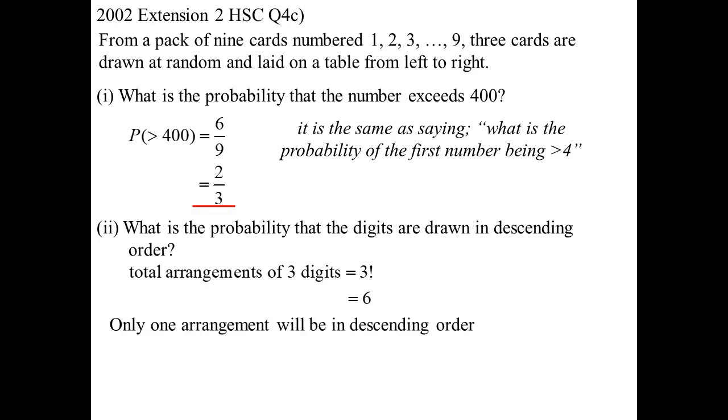Only one arrangement would be in descending order. Therefore, the probability is one in six. So actually, people would have spent a lot of time on that. When you think about it that way, it's very quick. Very quick.